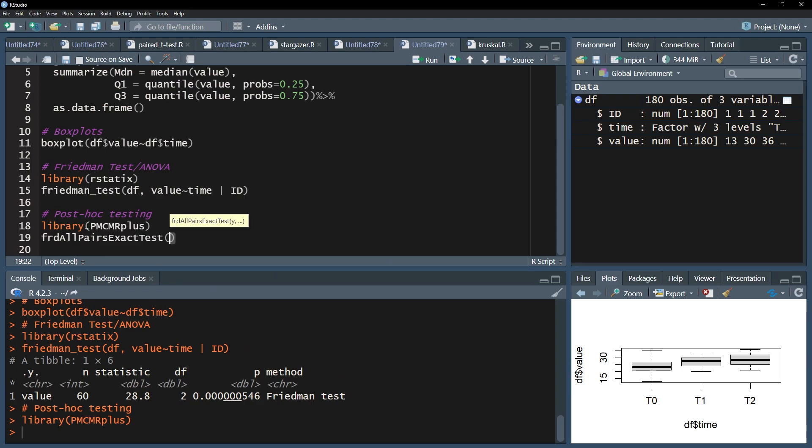Next, use the FriedmanAllPairsExactTest function and put in the dependent variable first. Add the time variable as well as the id variable, always referring to the respective data frame. Finally, the p.adjust.method argument is required to counter the alpha error inflation caused by multiple pairwise comparisons.